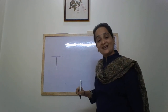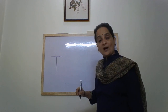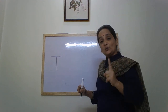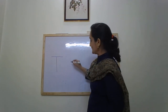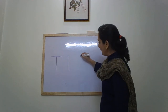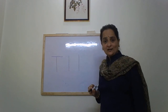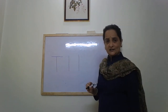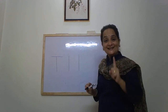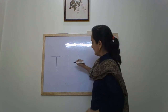Now, letter H. H has two standing lines and one sleeping line. Let us start with the standing lines — one standing line, one more standing line. And where is the sleeping line? Is it on the top, or is it down, or is it in the middle? It is in the middle. The sleeping line is in the middle.